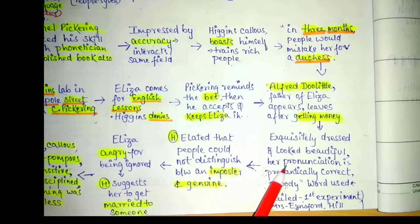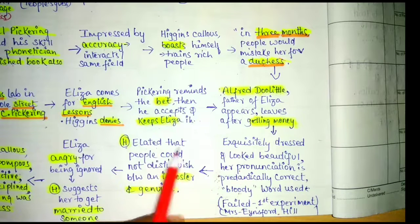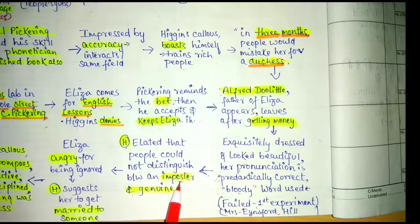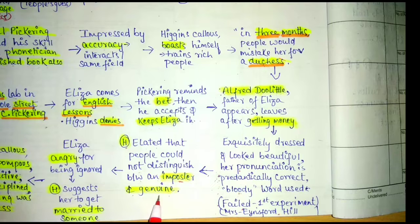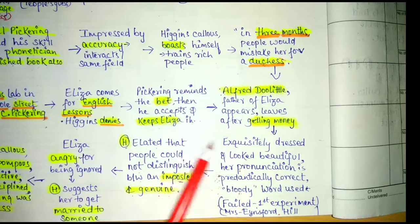When she talked about the weather it was like a meteorological report — so perfect with perfect vocabulary and perfect pronunciation. Higgins was very elated that people could not distinguish between an imposter and the genuine article. He considers Eliza an imposter and says that whatever he taught her was so genuine that people had mistaken her for a duchess. But this irritates Eliza.